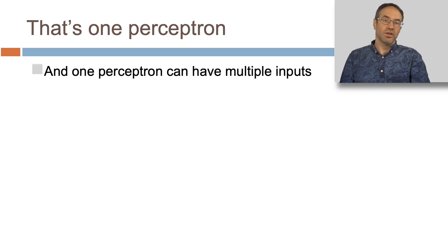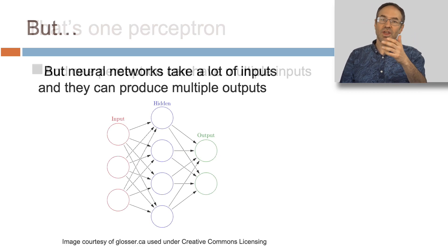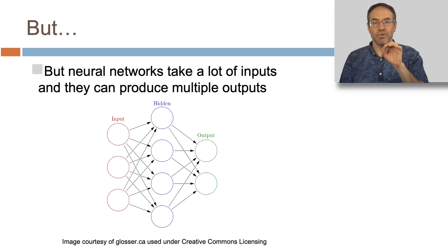Now that's one perceptron, and one perceptron can have multiple inputs. But notice I didn't say single perceptron model, I said neural network. Neural networks take a lot of inputs, and they can produce multiple outputs, which is kind of awesome.